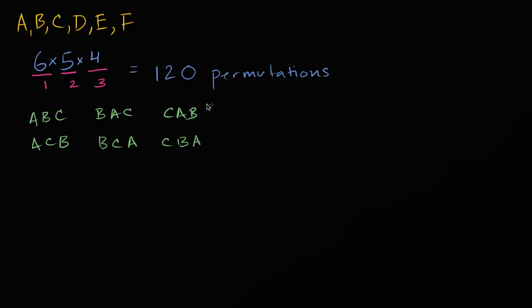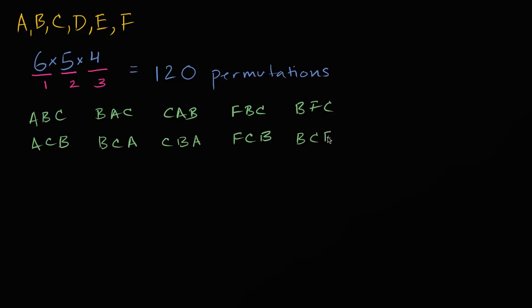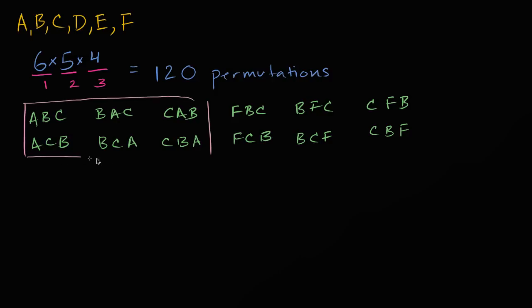We have other permutations involving other people — for example, FBC, FCB, BFC, BCF, CFB, CBF — and obviously I could keep going. In the permutation world, these are 12 of the 120 permutations. But what if all we cared about is the three people we're choosing to sit down, but we don't care in what order or which chair they're sitting in? In that world, all of those arrangements would be just one — the same set of three people.